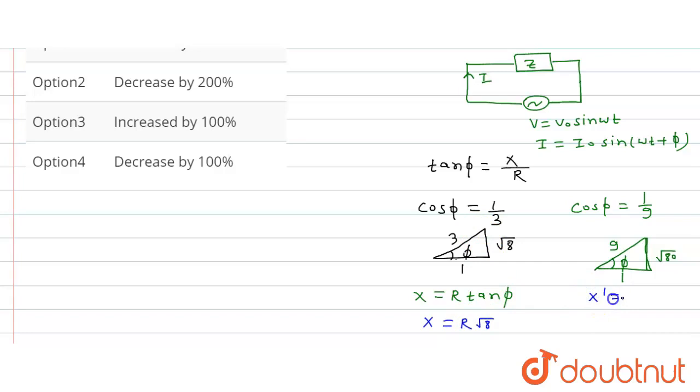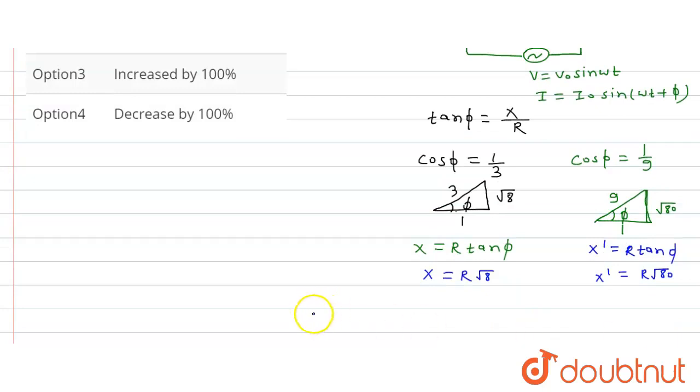And X dash will be R tan phi in this case, which is R into under root of 80. Now we need to find the percentage change.